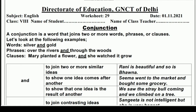Hello and welcome to Lavneesh Sarki class. This is the Direct Rate of Education GNCT of Delhi's Worksheet No. 29, and it is only for class 8 students. It is taken from the subject English, and we will learn and understand the topic 'conjunction' in this worksheet. So without wasting our time, let's start and understand together.